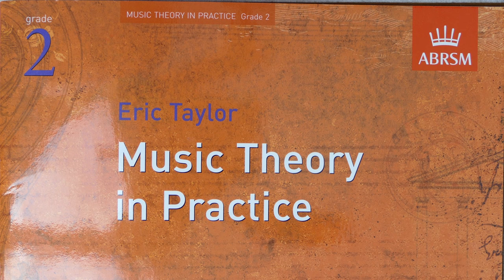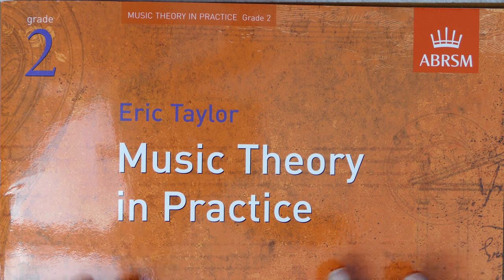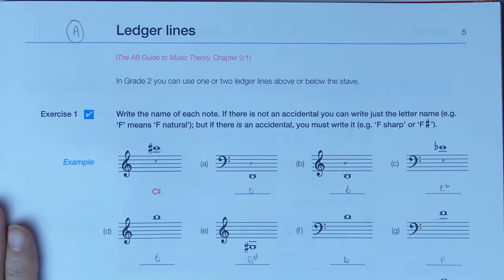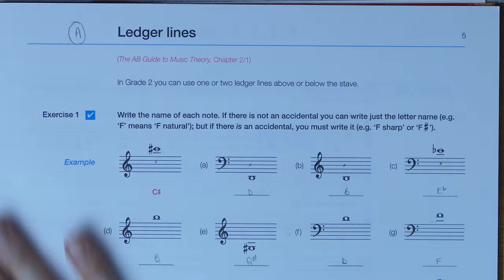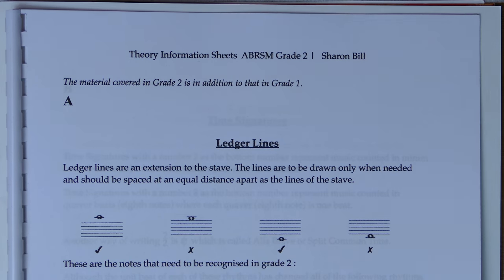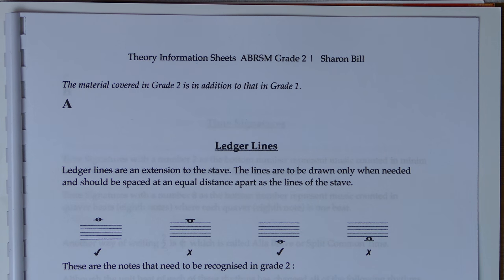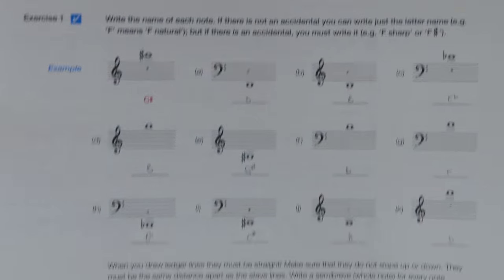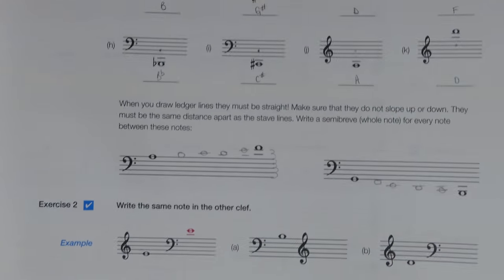Let's crack on with Grade 2 Theory in Practice. We're working on page 5, so turn in your workbook — you'll need to make sure you've got one of these workbooks to work through, so you can work with me every step of the way. You need to have your PDF sheet for this section: Grade 2, Section A. And we're going to be moving on to Exercise 2.